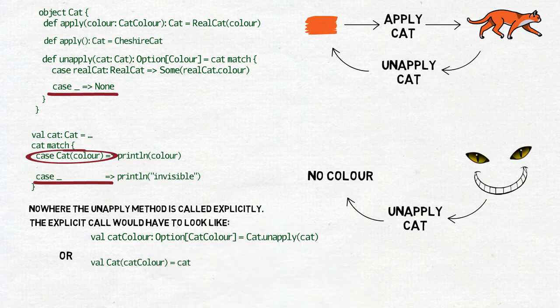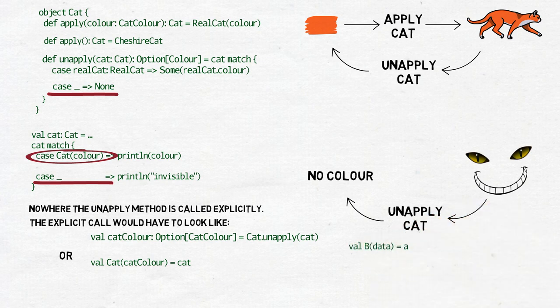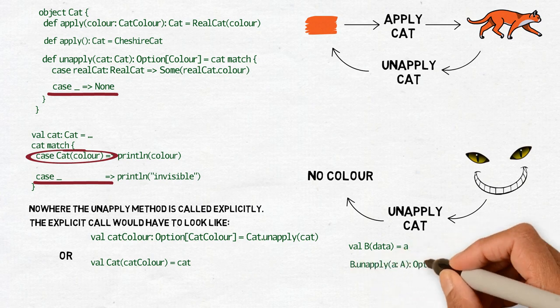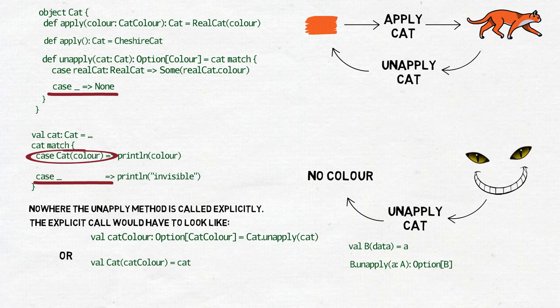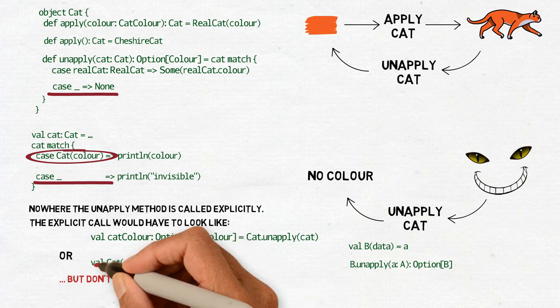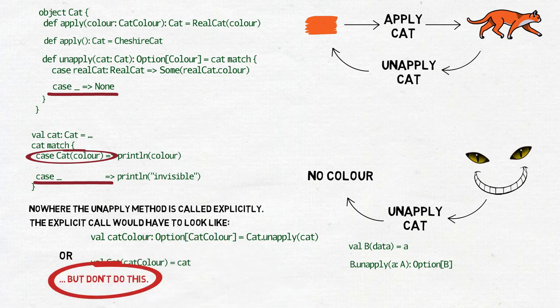You can sometimes see statements like this used as a form of data conversion. In the statement val b of data is a, the entity a on the right side is of type A and the object b has an unapply method declared as b.unapply of the argument A gives us an option of B, which must always return some data. By the way, the type B in the return option B does not necessarily have to be the same type as in the object B in which we define unapply.